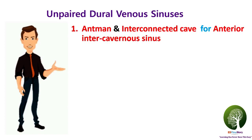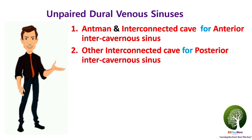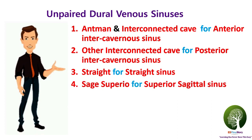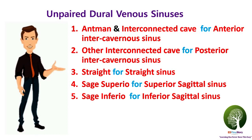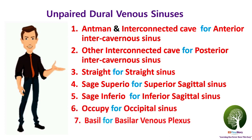Now let's see the story connection. Ant-Man is a clue for the anterior part — using Ant-Man and the interconnected cave we can easily remember the anterior intercavernous sinus. Since we have two interconnected caves in our story, along with the anterior intercavernous sinus we also have the posterior intercavernous sinus. Straight for the straight sinus. Sage for sagittal — twin brothers Sage Superior and Sage Inferior are a solid clue for the superior sagittal sinus and inferior sagittal sinus. Occupied for the occipital sinus. Basal for the last unpaired dural venous sinus, the basilar venous plexus.